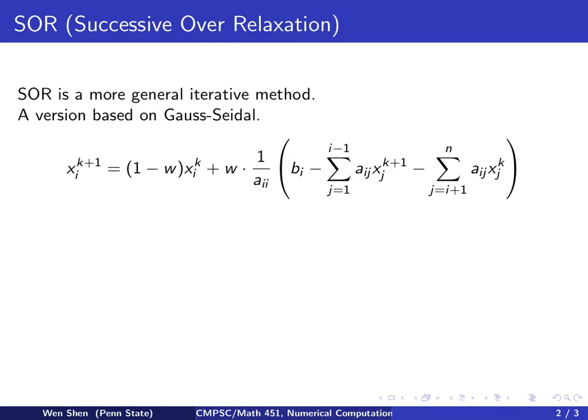We will combine Gauss-Seidel's step together with the parameter in the following way. Here's the iteration. xi^(k+1) is computed as (1-w) times xi^k plus w times this whole quantity.